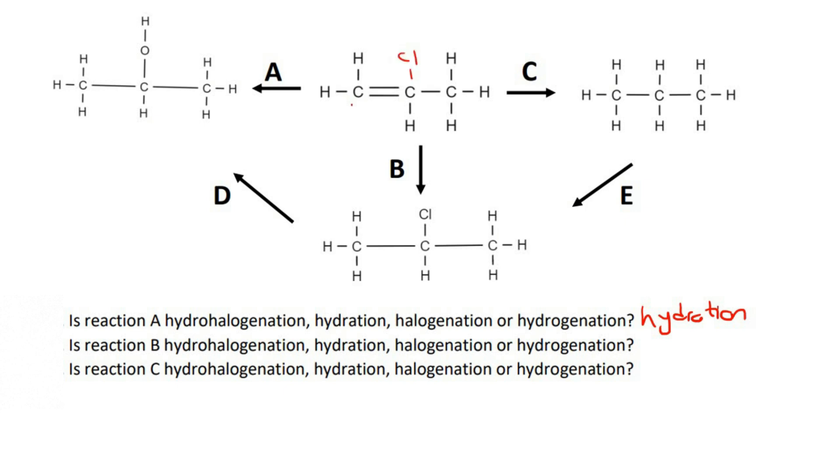Well, we're adding a Cl, see it there? And then we're adding a hydrogen over there. So we're adding a hydrogen and a halogen. So this is hydro. I'm just going to circle it. It's hydrohalogenation.